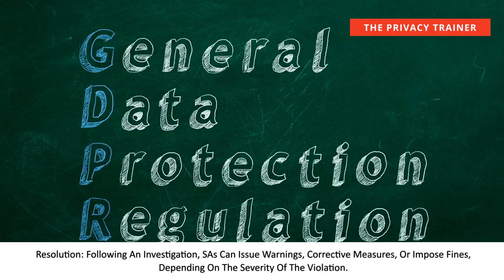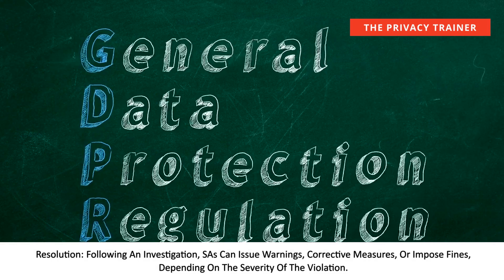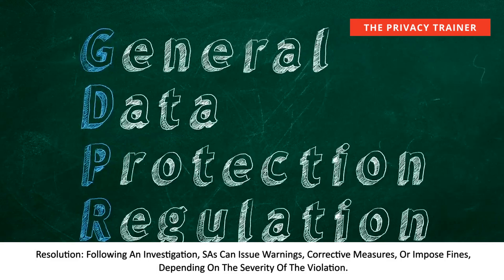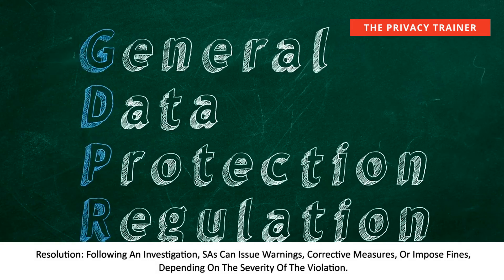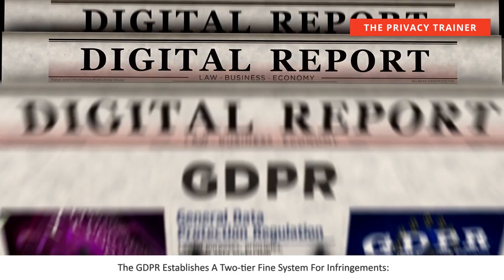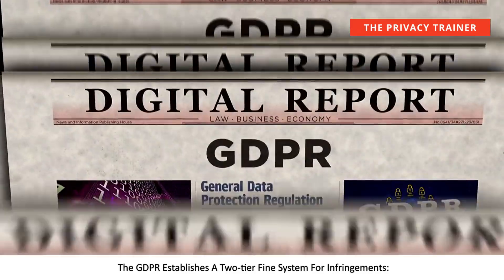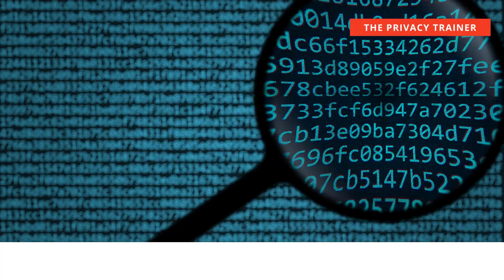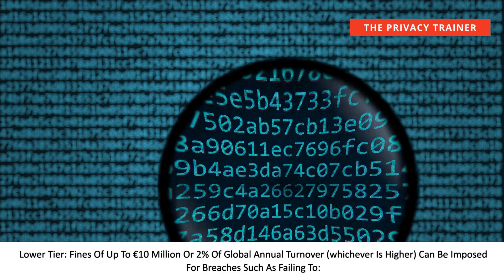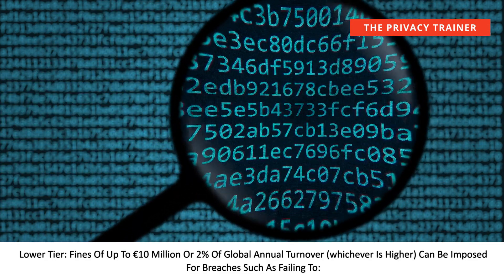Resolution. Following an investigation, SAs can issue warnings, corrective measures, or impose fines, depending on the severity of the violation. Infringements and Fines. The GDPR establishes a two-tier fine system for infringements. Lower-tier fines of up to 10 million euros or 2% of global annual turnover, whichever is higher.